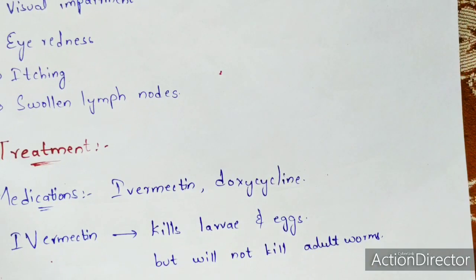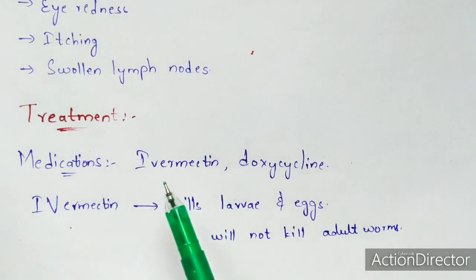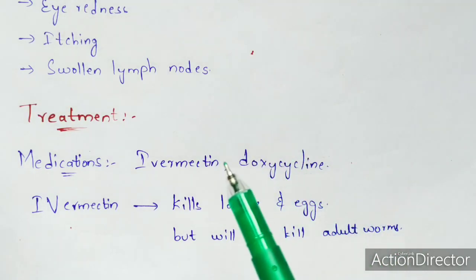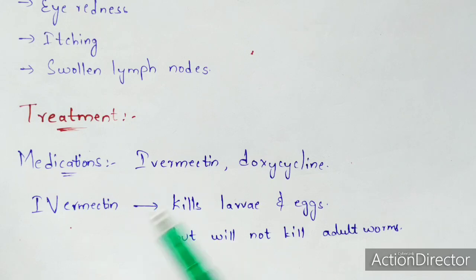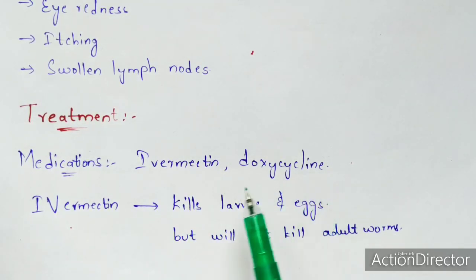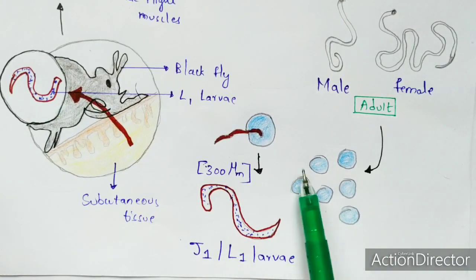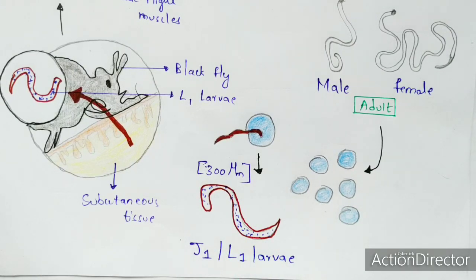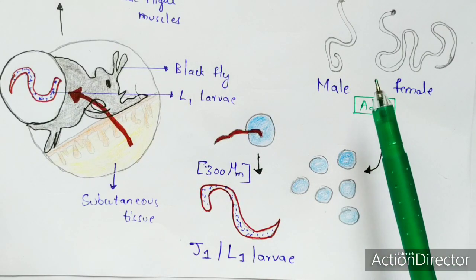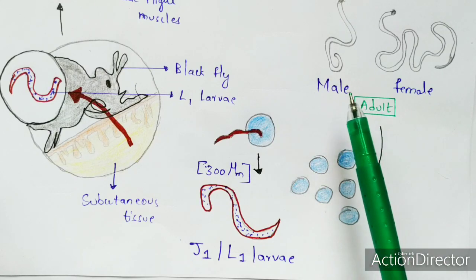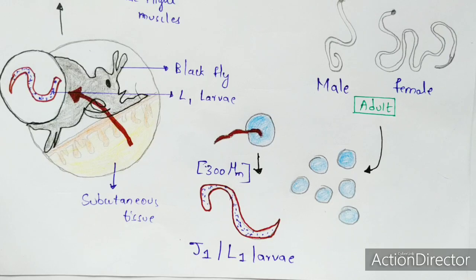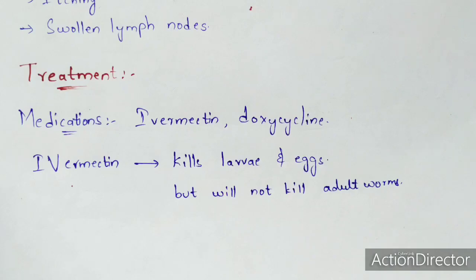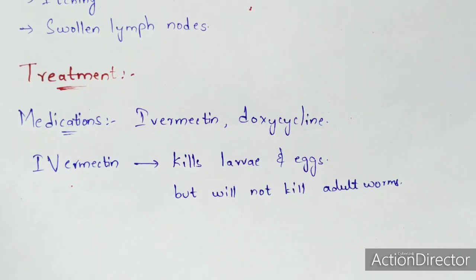The medications used to treat onchocerciasis are ivermectin and doxycycline, which are anti-parasitic drugs. Ivermectin plays a major role by killing the larvae and eggs, but it does not kill the adult male or female worms — those remain alive even after treatment.